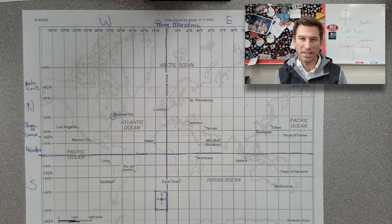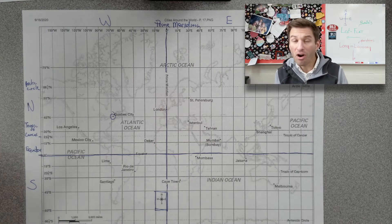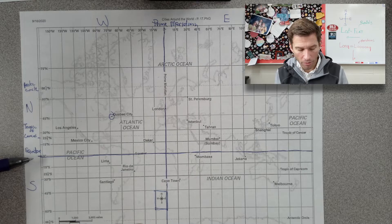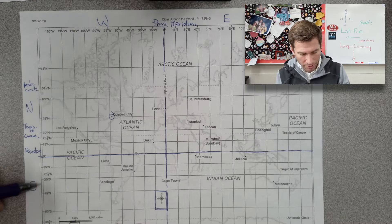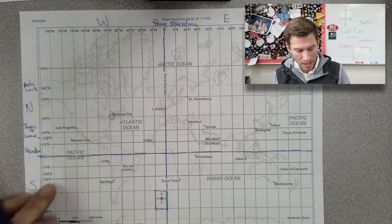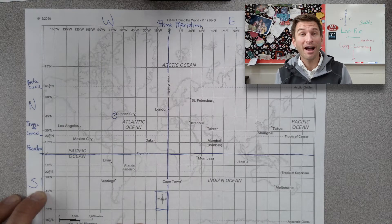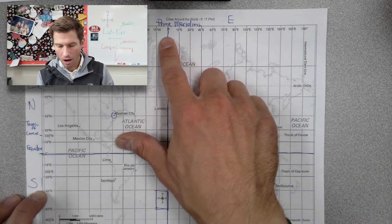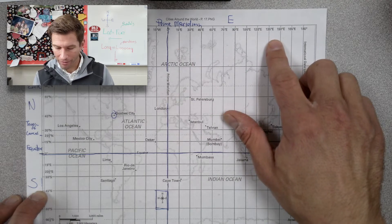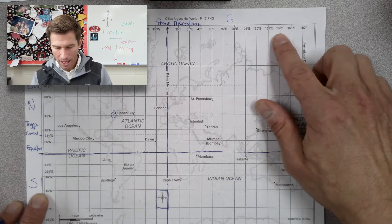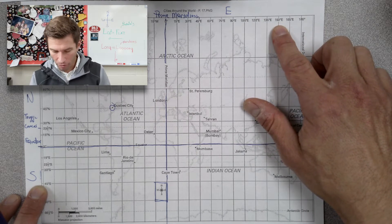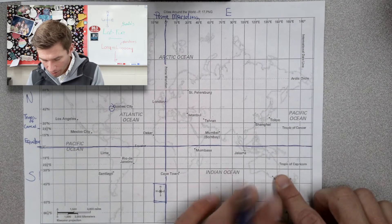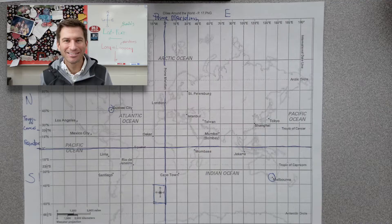Next example: 38 degrees south and 145 degrees east. We start at the equator and go south — 38 is between 30 and 45. Then from the prime meridian going east to 145 degrees. Following those two coordinates together — 38 south and 145 east — we end up down under in Melbourne, Australia. That's how it looks on a relatively flat square grid map — pretty straightforward, a lot like battleship.